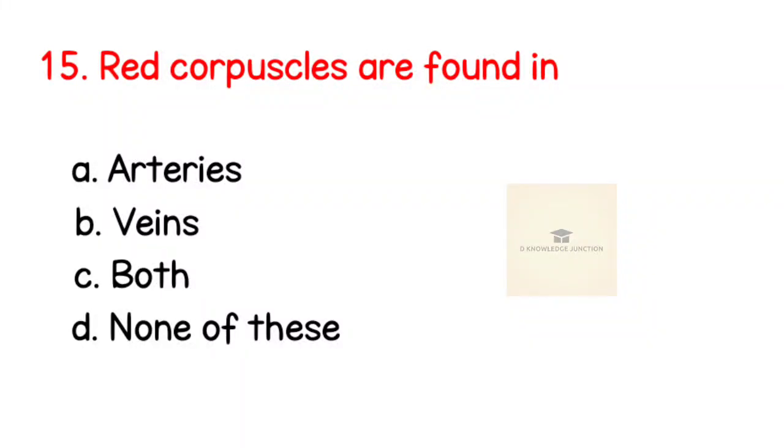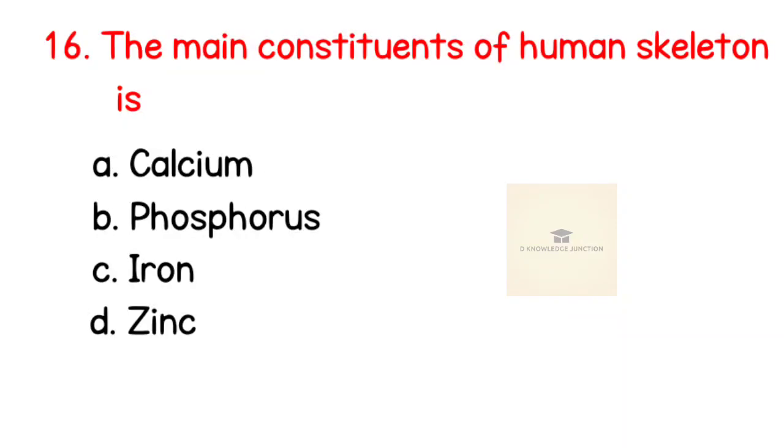Question number 15: Red corpuscles are found in? Right answer is both in arteries and vein. Question number 16: The main constituent of human skeleton is? Right answer is calcium.